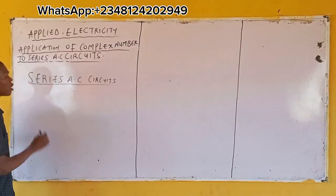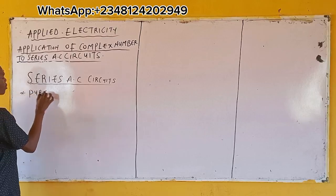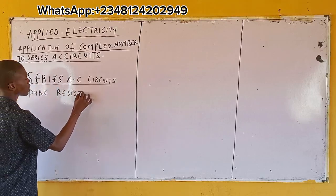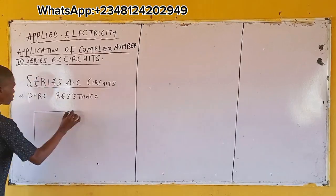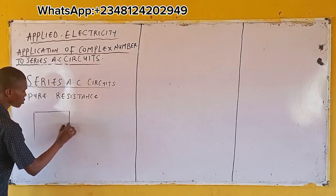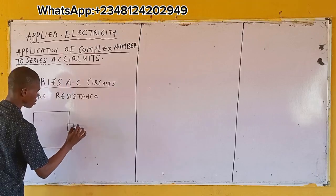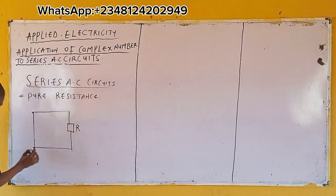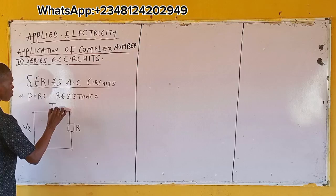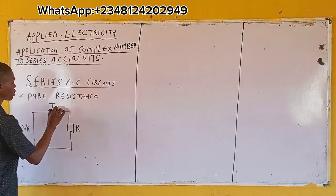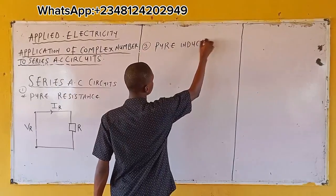When you have your pure resistance — and similarly pure inductance — let's see the circuit diagram. This is your pure resistance, this is number one; number two is pure inductance.